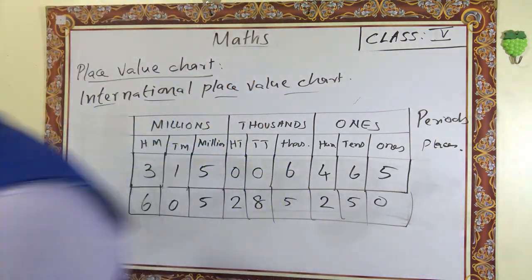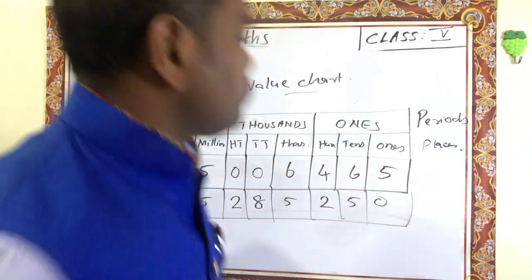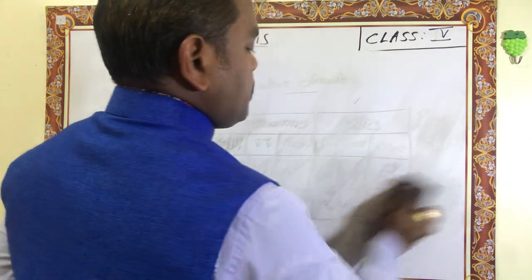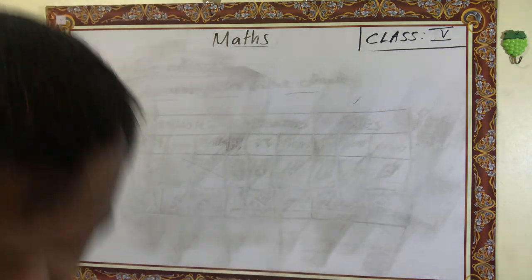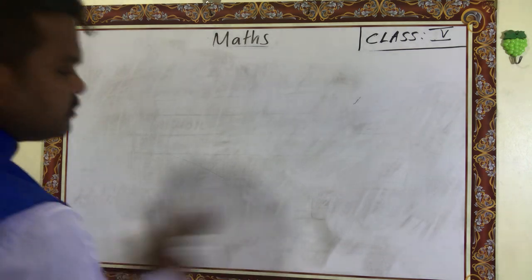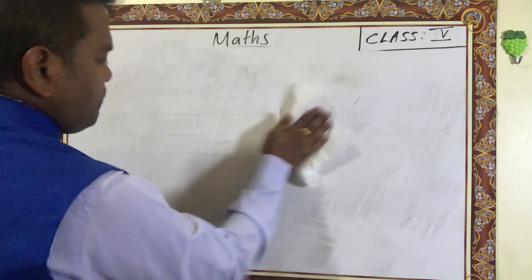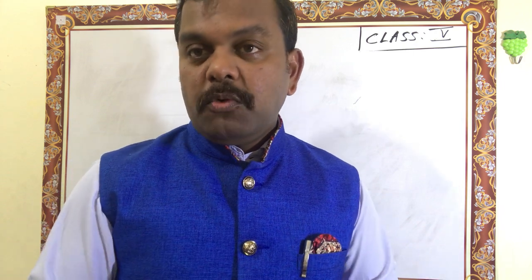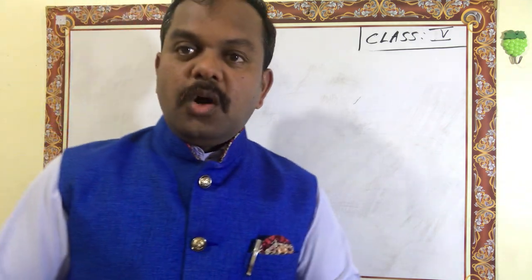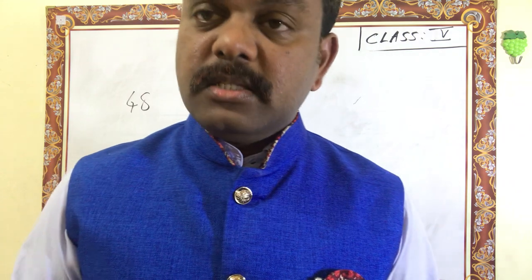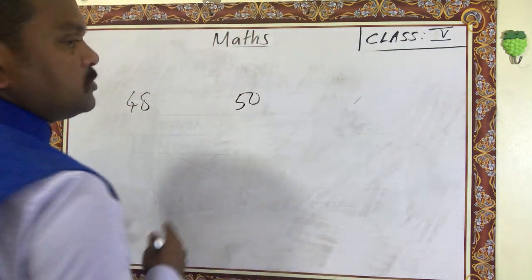Next topic is rounding numbers. For example, if you are traveling in a bus that has 50 seats and 48 passengers are traveling, and someone asks you how many passengers are traveling with you, you would say 50. That is rounding numbers — rounding 48 up to the nearest ten, which is 50.